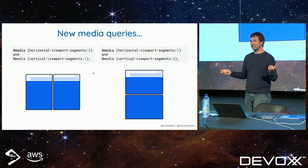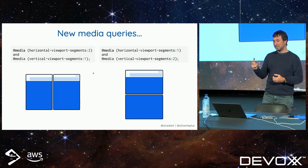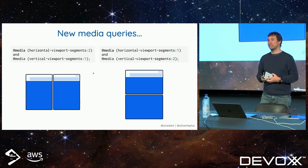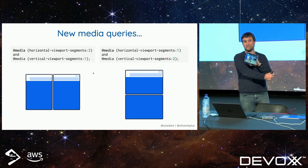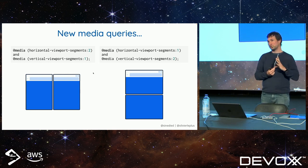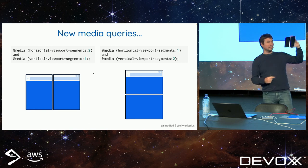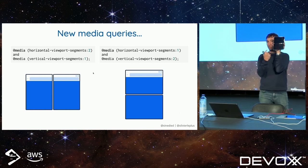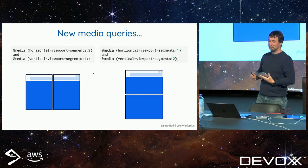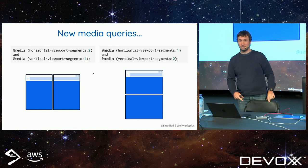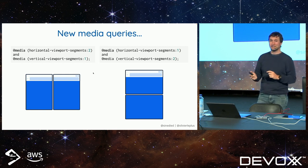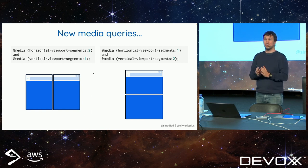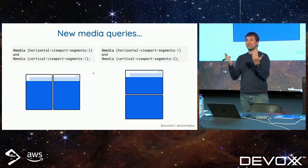When we talk about responsive design, the first thing we think about is media queries. For these new form factors, there are two new media queries: Horizontal Viewport Segments — the number of segments on the horizontal X axis — and Vertical Viewport Segments — the number of screens on the vertical axis. So this orientation is two horizontal, one vertical; when flipped, it's one horizontal and two vertical. We talk about segments and not screens because some devices like the Samsung Galaxy Fold have just one screen that folds, but there are still two segments.